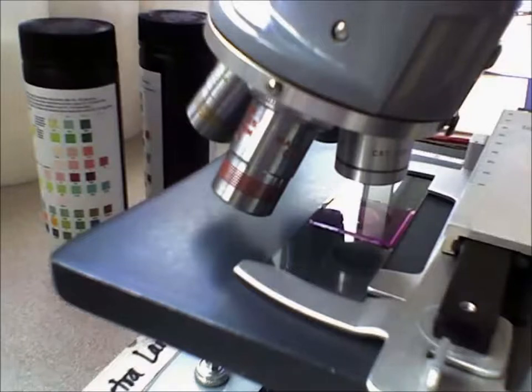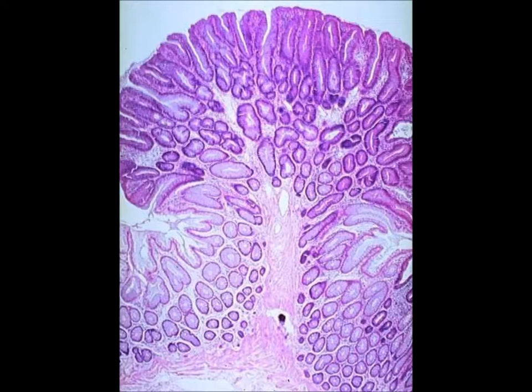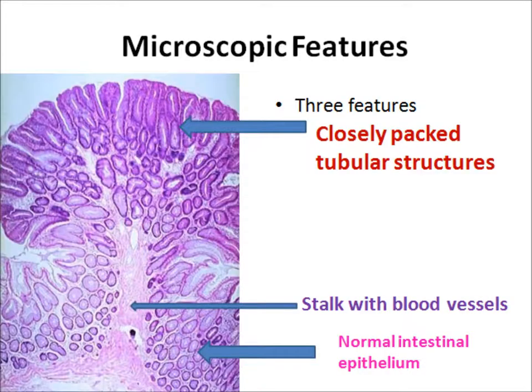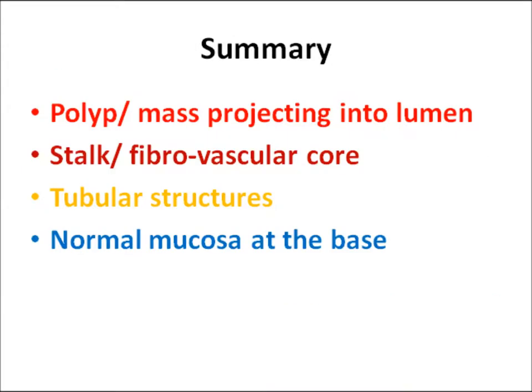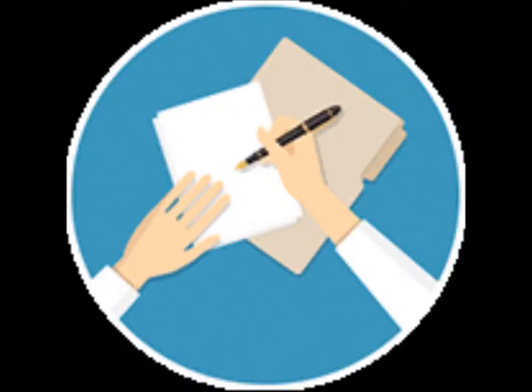Microscopic examination of the specimen confirms the gross findings. There is a fibrovascular core, tubular structures, and normal intestinal epithelium at the base. To summarize the microscopic findings: polyp stock, fibrovascular core, tubular structures, and normal mucosa at the base.